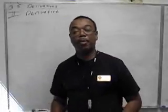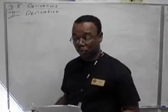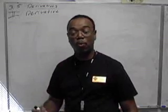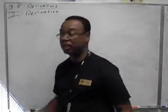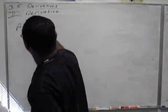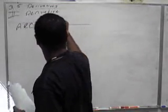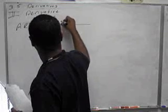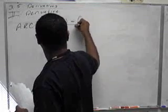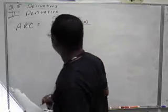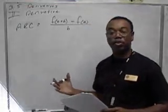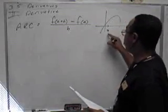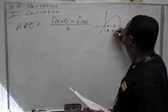Now, to find the derivative, which is an instantaneous rate of change at a single point, we're going to use the average rate of change. This gives us the average rate of change between two points, the point A and the point A plus H.